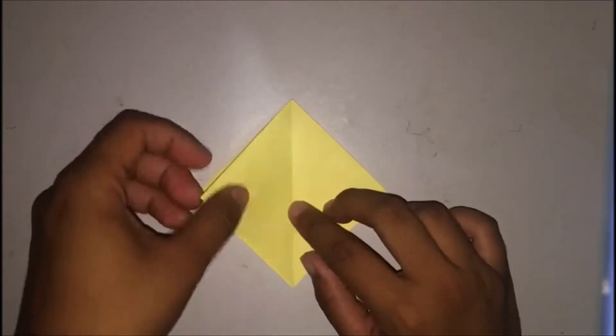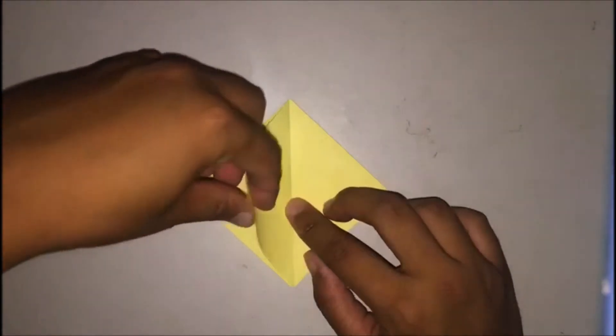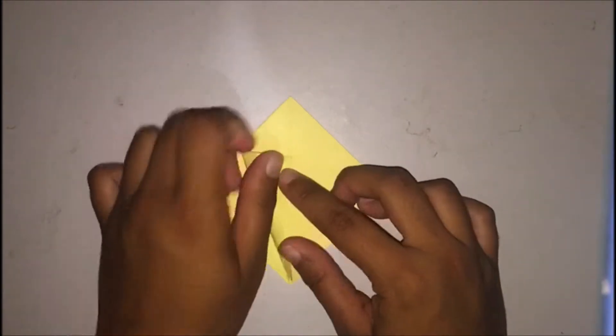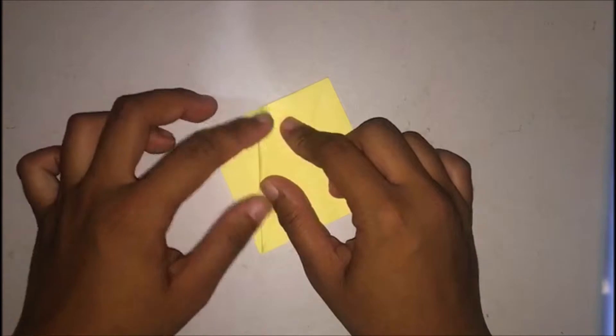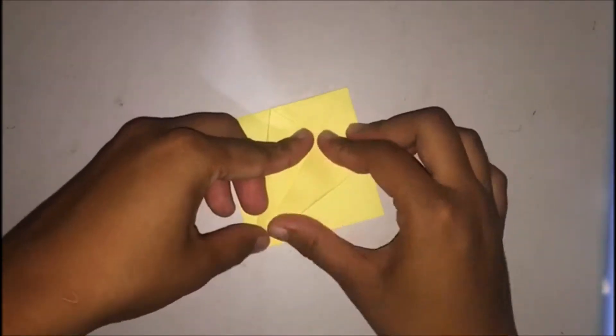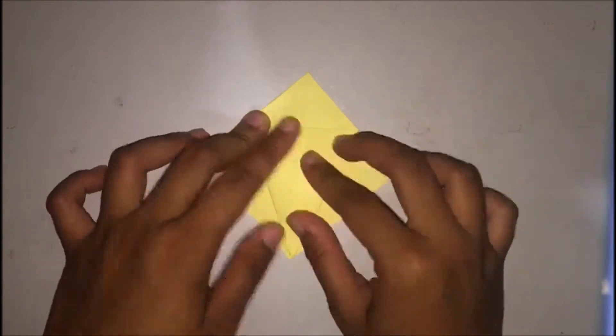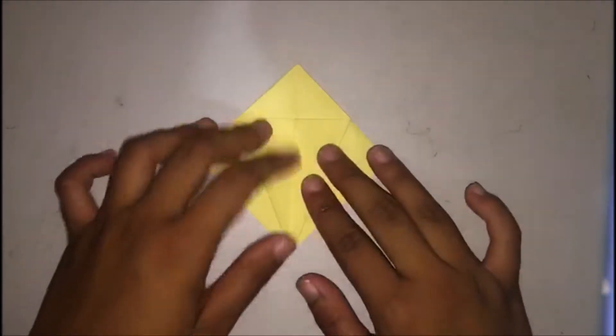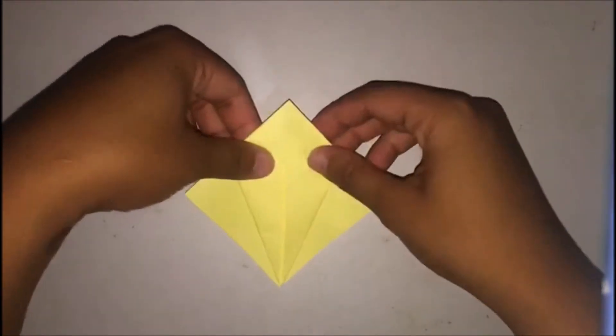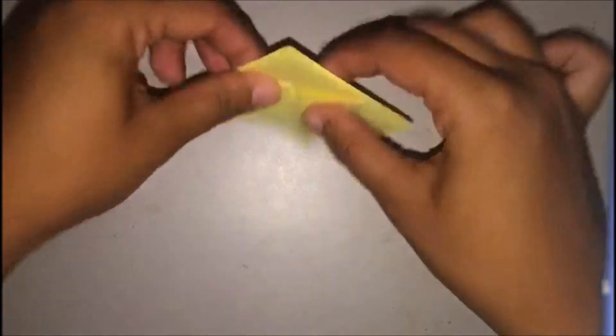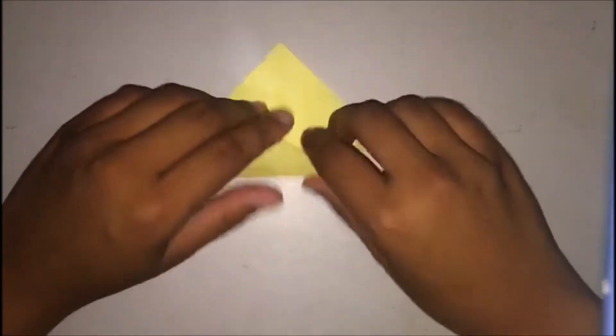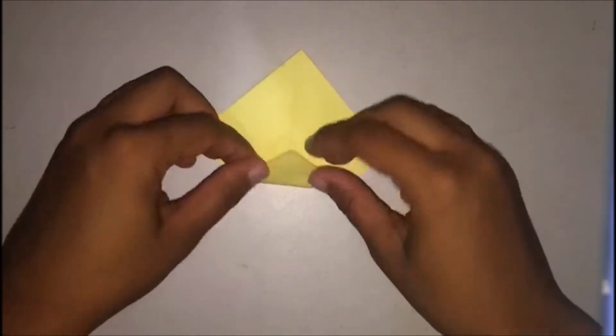Now the next step is to take one of the flaps and fold it in towards the center. Once you've done that, you take this part and fold it over to the other side. So this part, take it over and fold it up. Make sure you don't do this part, just fold it up.